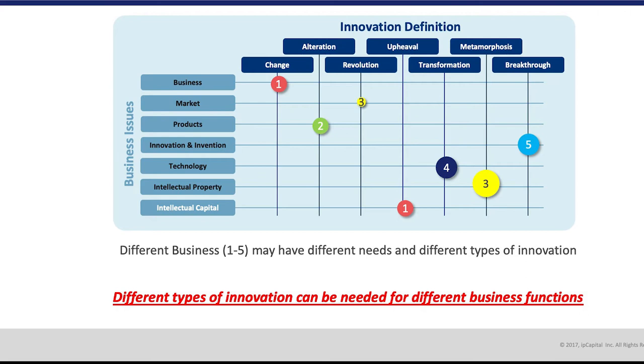We can see that innovation can also occur in any place in your business. A new model for innovation ties to business issues — you can see business, market, product, technology, intellectual property, intellectual capital on one axis, and the many types of innovation — change, alteration, revolution, upheaval, etc. — on another. There are different types of innovation: you could have an upheaval or just a small change, both valid innovations.